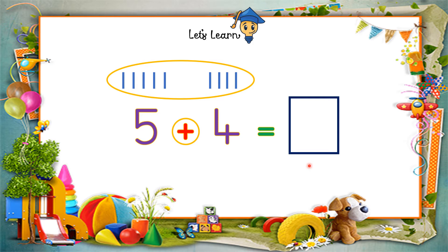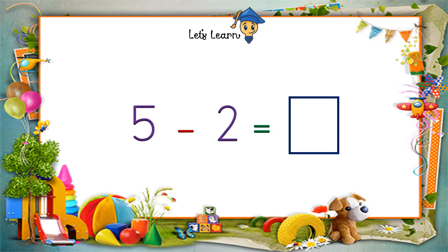So the answer will be 9, and the sum is complete now. 5 plus 4 is equals to 9. Let's check out the next sum.